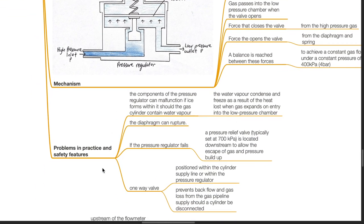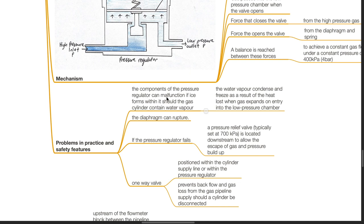Problems in practice and safety features. The components of the pressure regulator can malfunction if ice forms within it, should the gas cylinder contain water vapor. The water vapor condenses and freezes as a result of heat loss when gas expands on entry into the low pressure chamber. The diaphragm can rupture. If the pressure regulator fails, a pressure relief valve, typically set at 700 kPa or 7 bar, is located downstream to allow the escape of gas and pressure build-up. One-way valve positioned within the cylinder supply line prevents backflow and gas loss from the gas pipeline supply should a cylinder be disconnected.